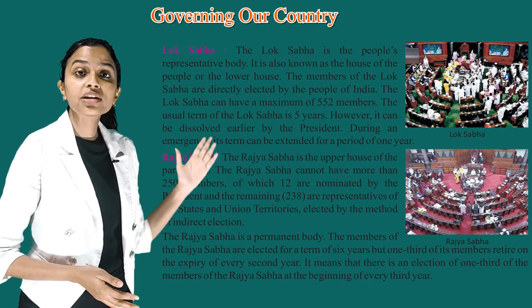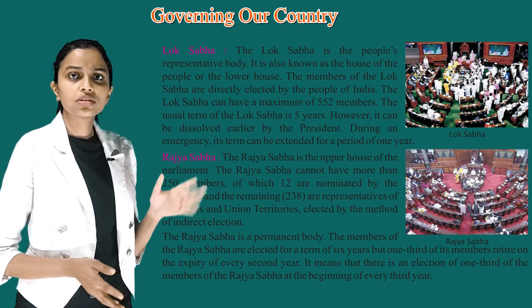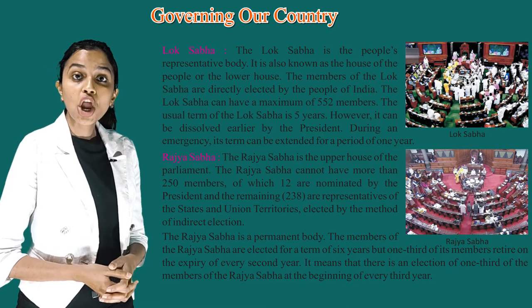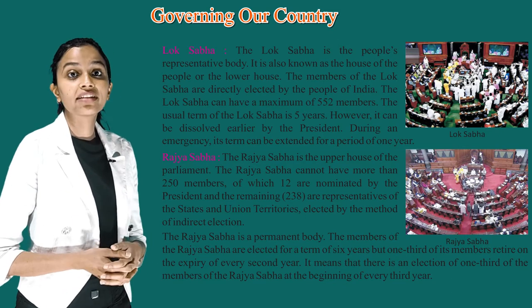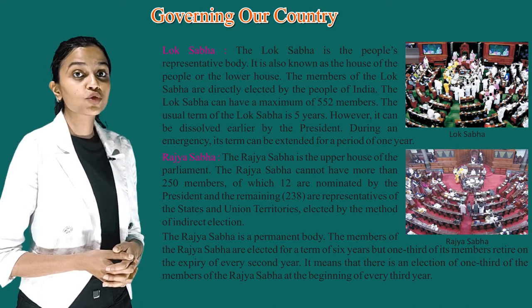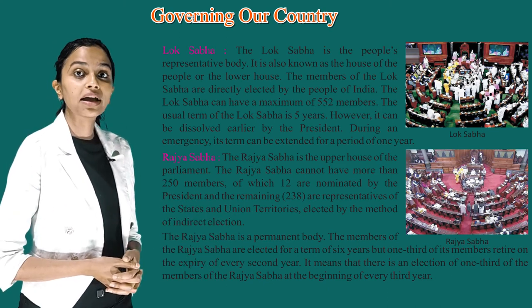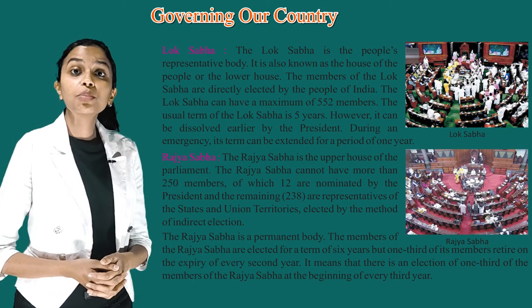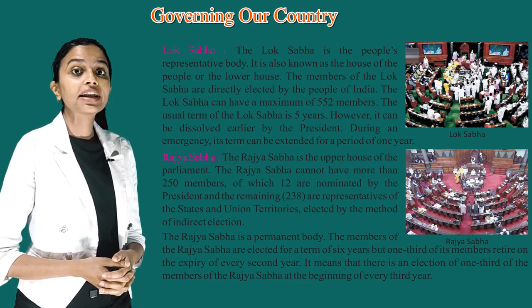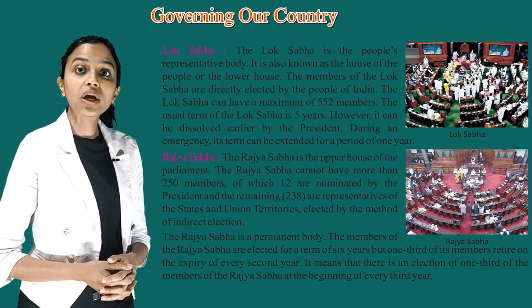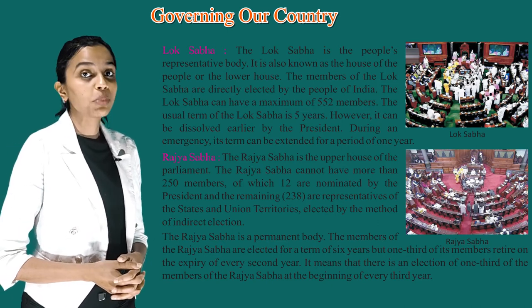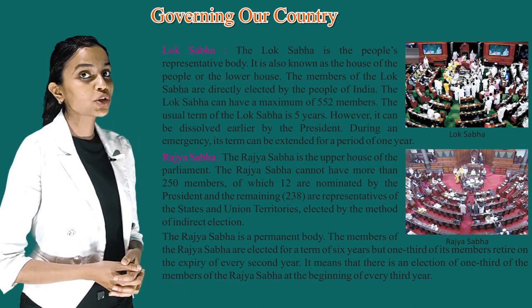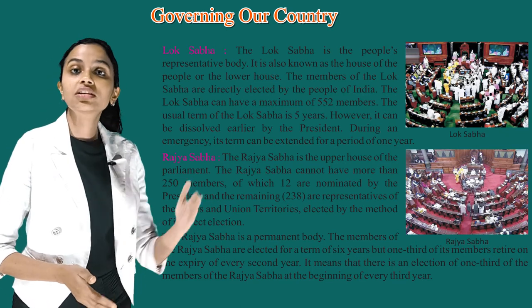Rajya Sabha: the Rajya Sabha is the upper house of the Parliament. It cannot have more than 250 members, of which 12 are nominated by the President and the remaining 238 are representatives of the states and union territories elected by the method of indirect election. The Rajya Sabha is a permanent body. Its members are elected for a term of 6 years, but one third of its members retire on the expiry of every 2nd year, meaning there is an election of one third of the members at the beginning of every 3rd year.